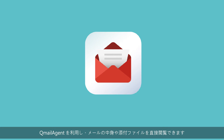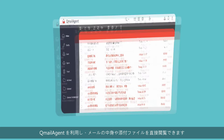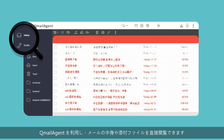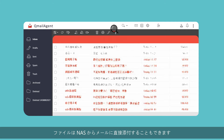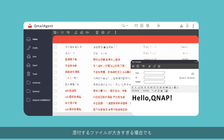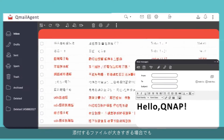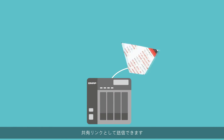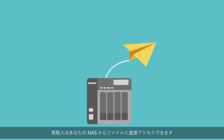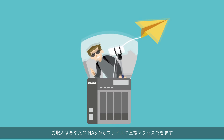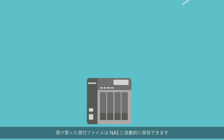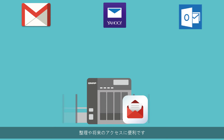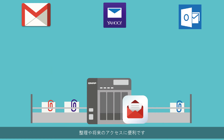You can directly review email content and attachments using QMail Agent. Files can also be directly attached to your emails from the NAS, and if the file is too large to be attached, it can still be sent as a share link to allow your recipients to directly access it from your NAS. Attachments you receive can be automatically saved to the NAS to allow for convenient filing and future access.